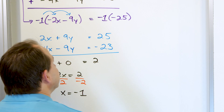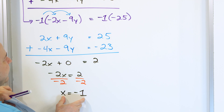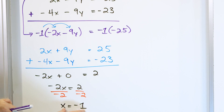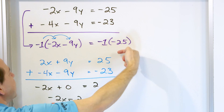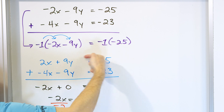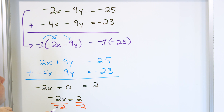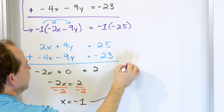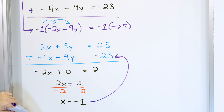Now the rest of the solution proceeds as usual. I can take x equals negative 1 and put it into any of the equations — any of them will give the same result. I'm going to substitute it into the bottom equation, just because it's the closest one. There's no real preference; it's all going to be the same.